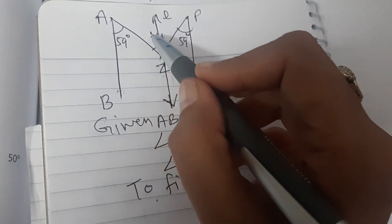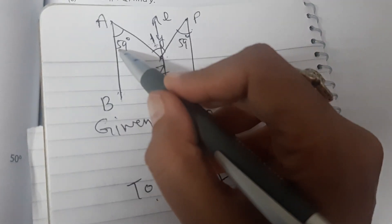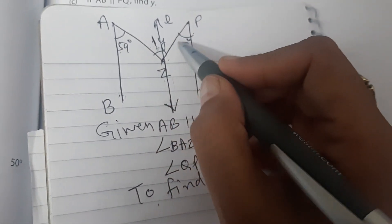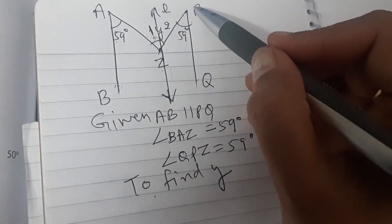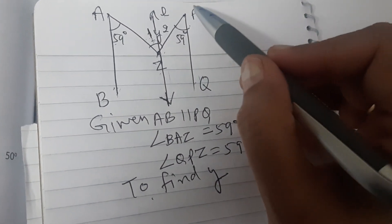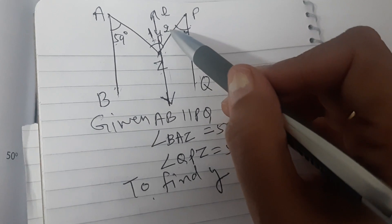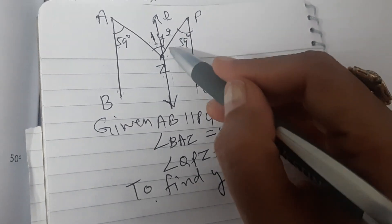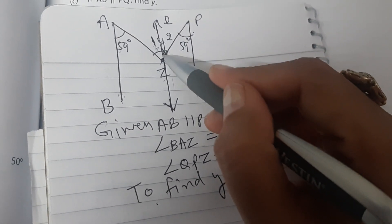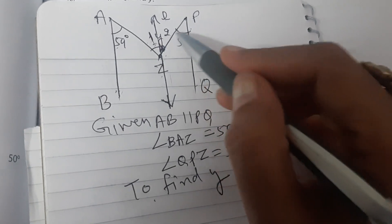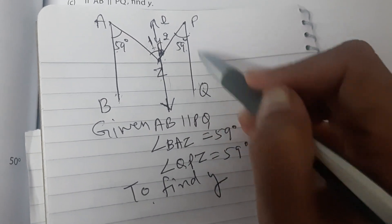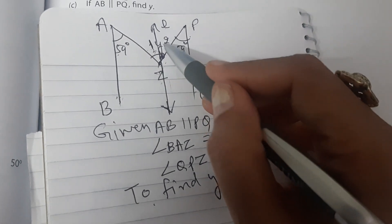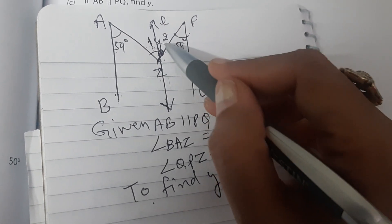So angle 1 will be equal to 59 degrees. Perfect. So now you tell me, line L is parallel to PQ and PZ is transversal. So what will be angle 2? Yes, you are right. It will be equal to 59 degrees because angle QPZ and angle 2 are alternate interior angles.